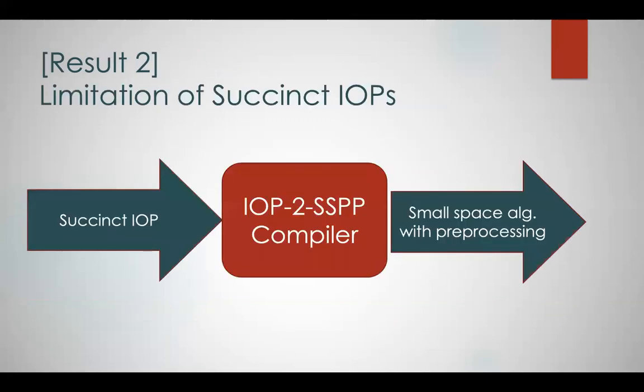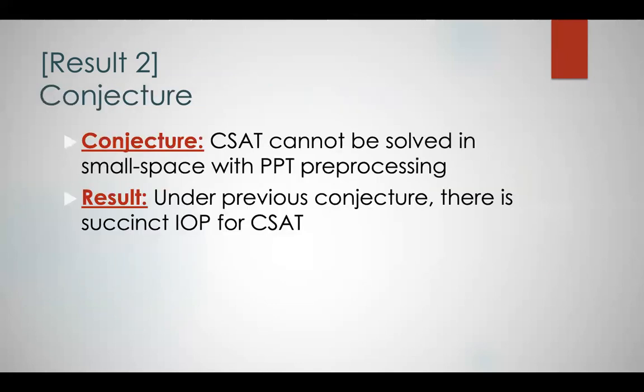How do we show that? At the first step, we show a compiler that takes a succinct IOP and produces a small space algorithm with polynomial time preprocessing. We then conjecture that circuit SAT — the Boolean satisfiability problem for circuits rather than just specific formulas — cannot be solved in small space with polynomial time preprocessing. Combining the conjecture with the compiler, we get that under this conjecture, there is no succinct IOP for circuit SAT, or more generally, for all of NP.